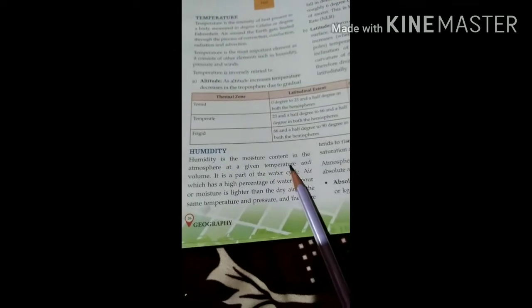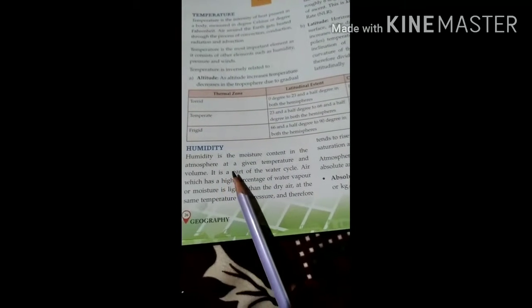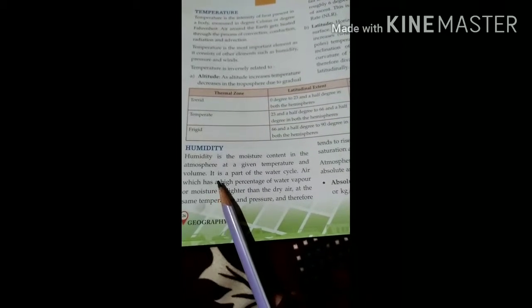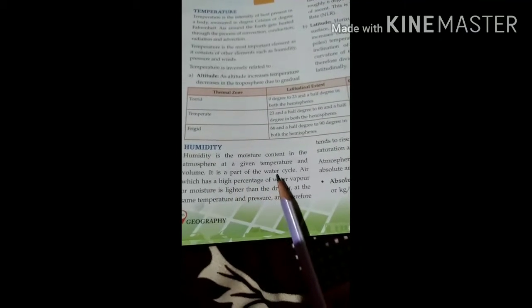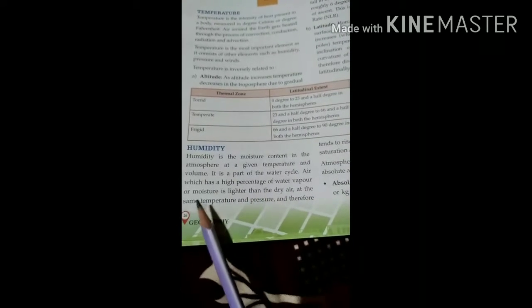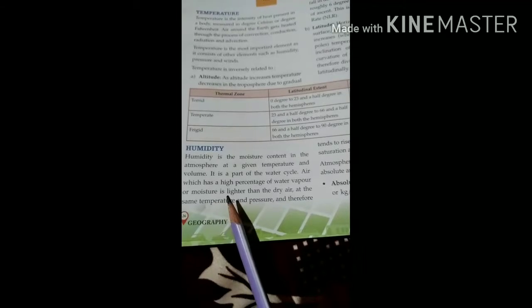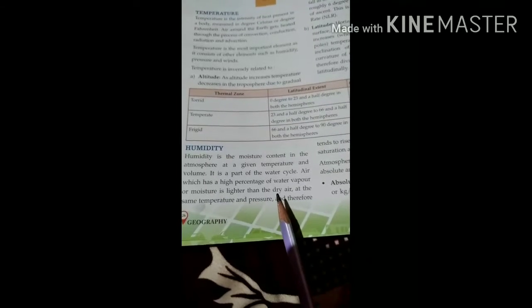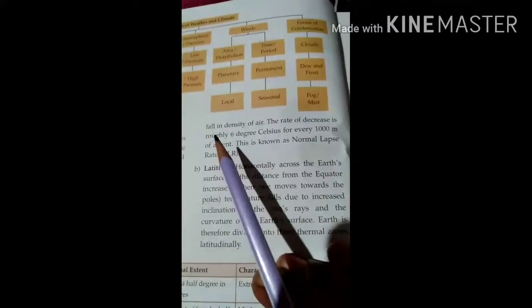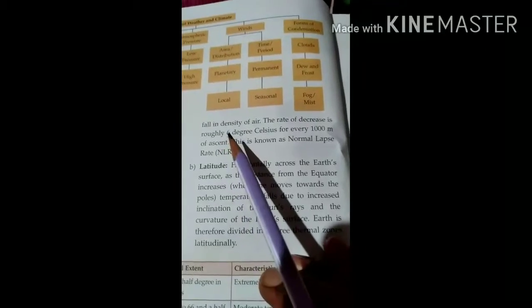Humidity is the moisture contained in the atmosphere at a given temperature and volume. It is a part of the water cycle. Air which has higher percentage of water vapor or moisture is lighter than dry air at the same temperature and pressure, and therefore falls in density.